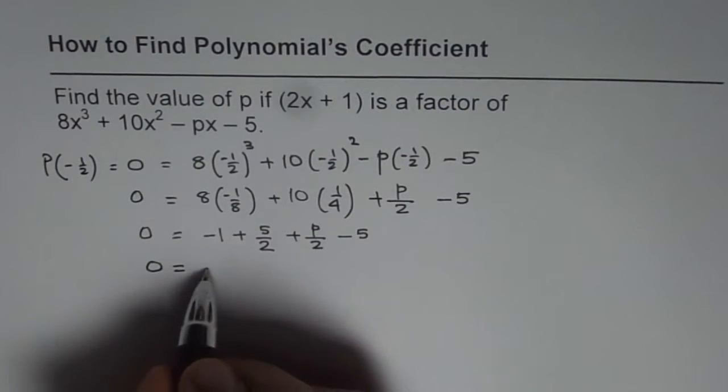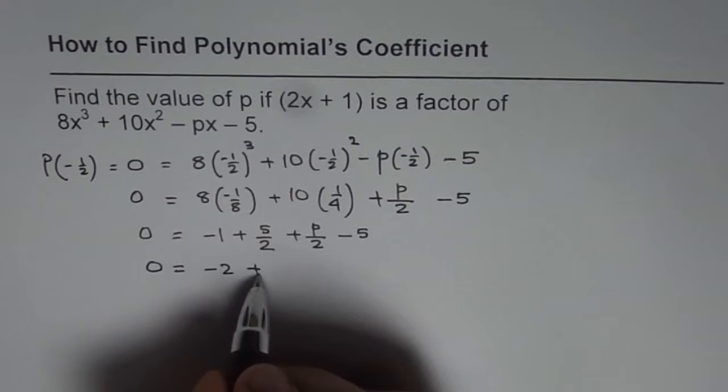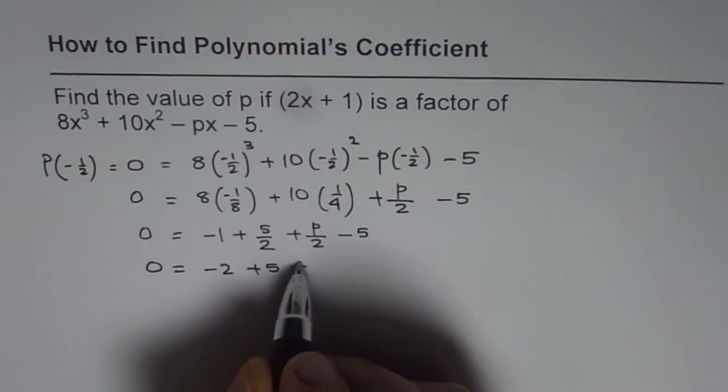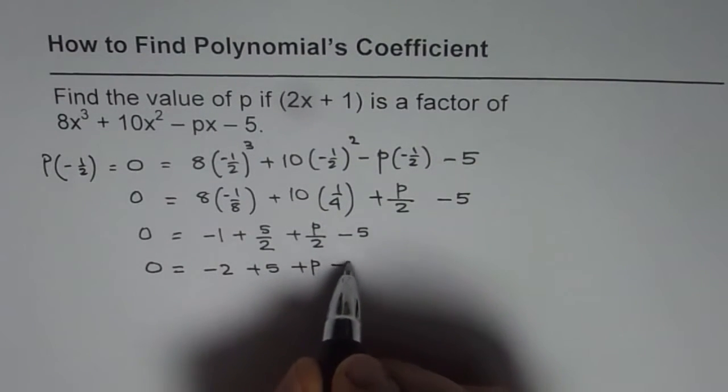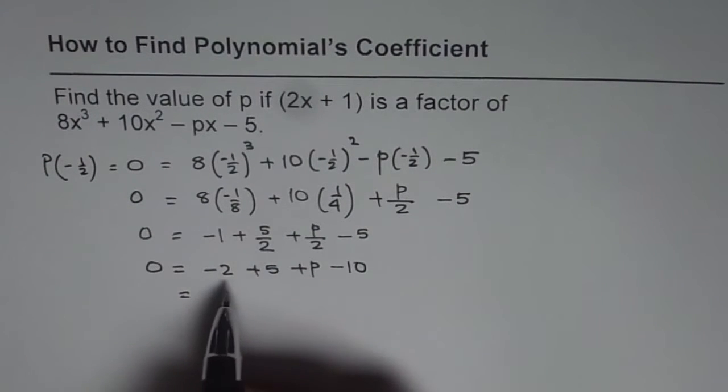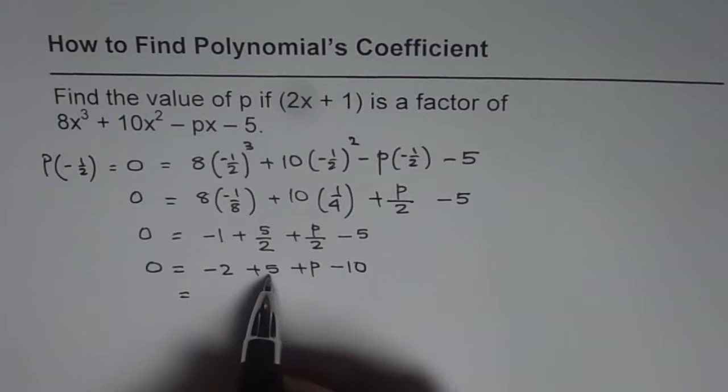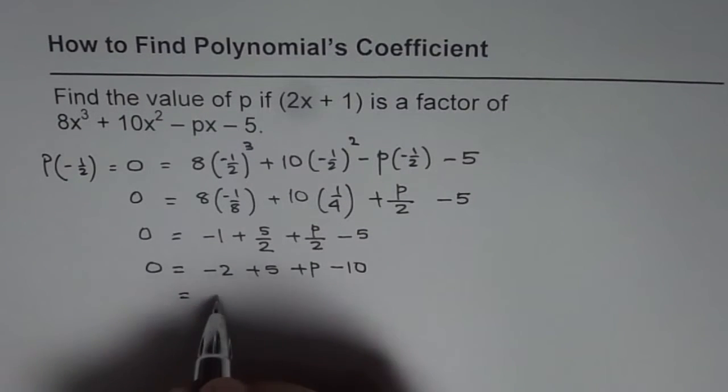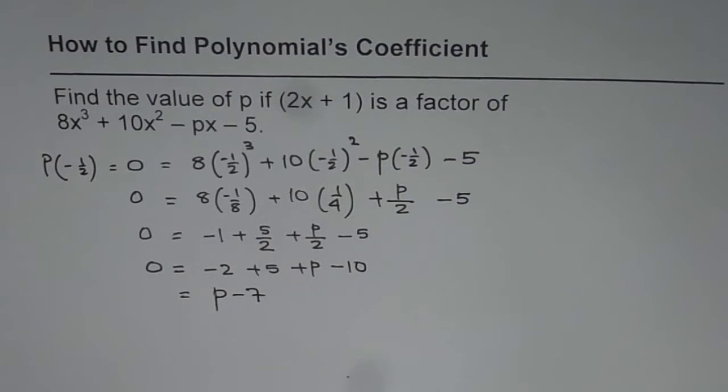I get 0 equals to minus 2 plus 5 plus p minus 10. And from here we can solve minus 2 plus 5 is plus 3, plus 3 minus 10 is minus 7. So I get p minus 7 or the value of p is 7.